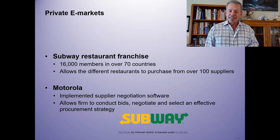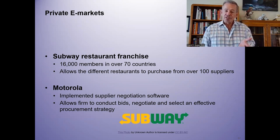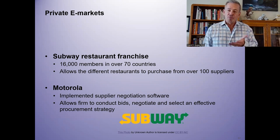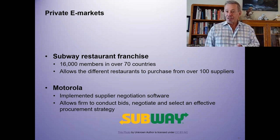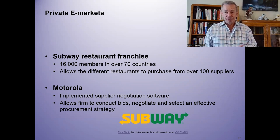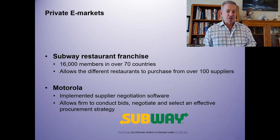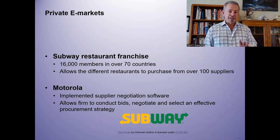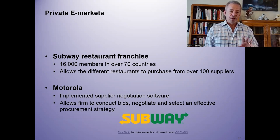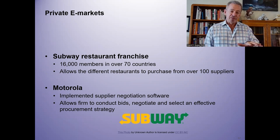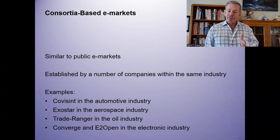Subway has 16,000 members in over 70 countries and lets their restaurants purchase from over 100 suppliers. Some franchises, though, try to lock you into only their one supplier — and they probably get a little commission on the side. Motorola also has their own approach, allowing different vendors to use supplier negotiation software.